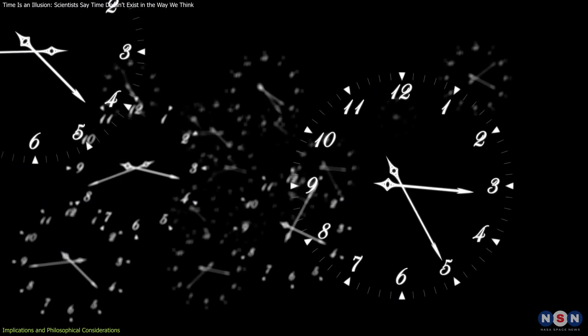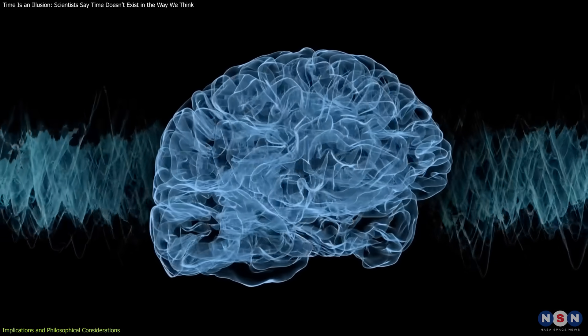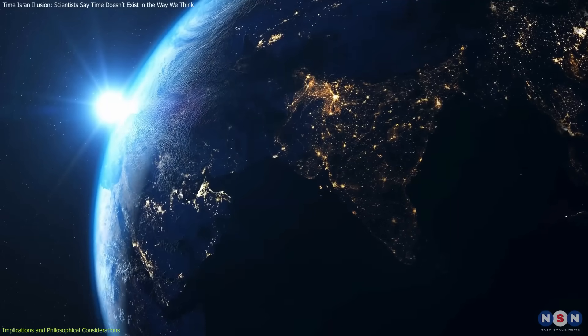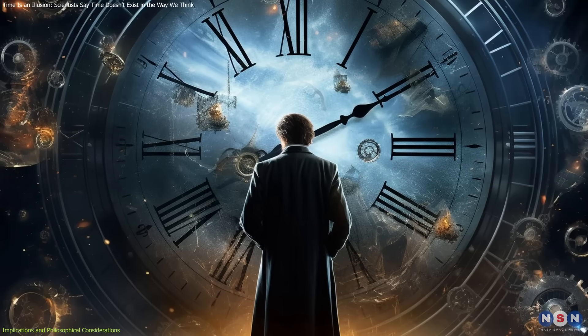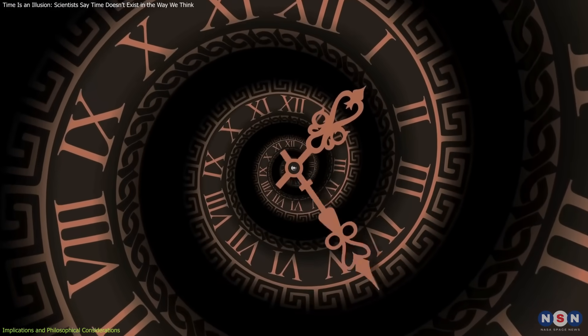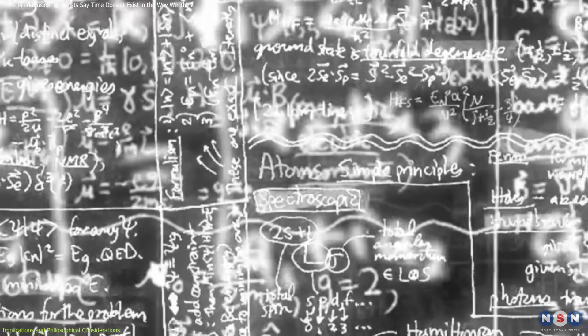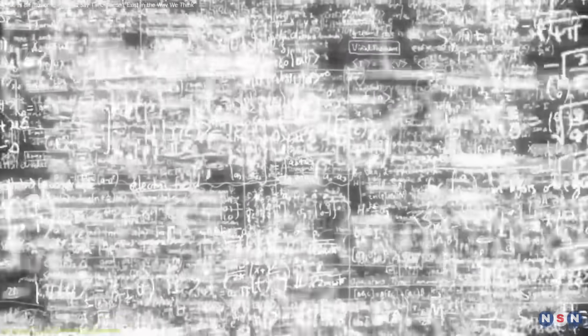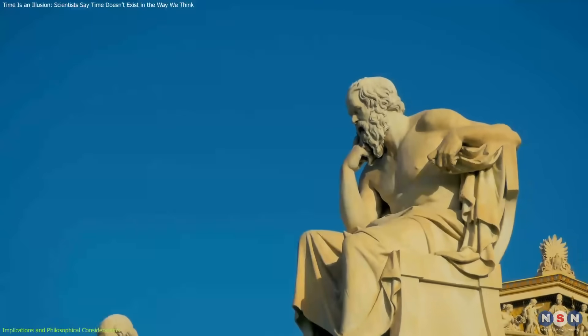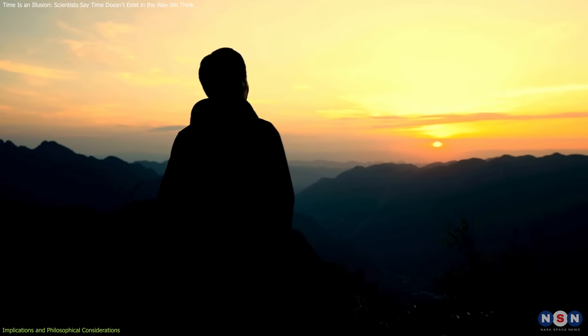However, if time is an illusion, it raises questions about the relationship between consciousness and the physical world. Could our perception of time be a survival mechanism rather than a reflection of objective reality? And if so, what does this mean for concepts like free will and causality? The implications of emergent time extend beyond physics into philosophy and daily life. Philosophically, it challenges the concept of free will.